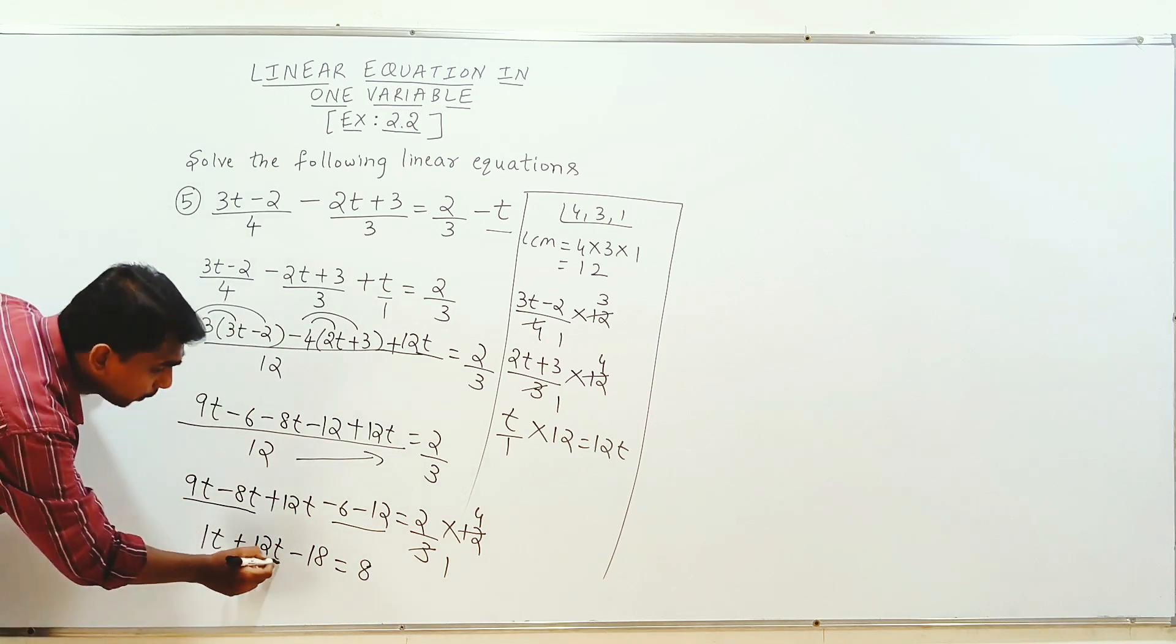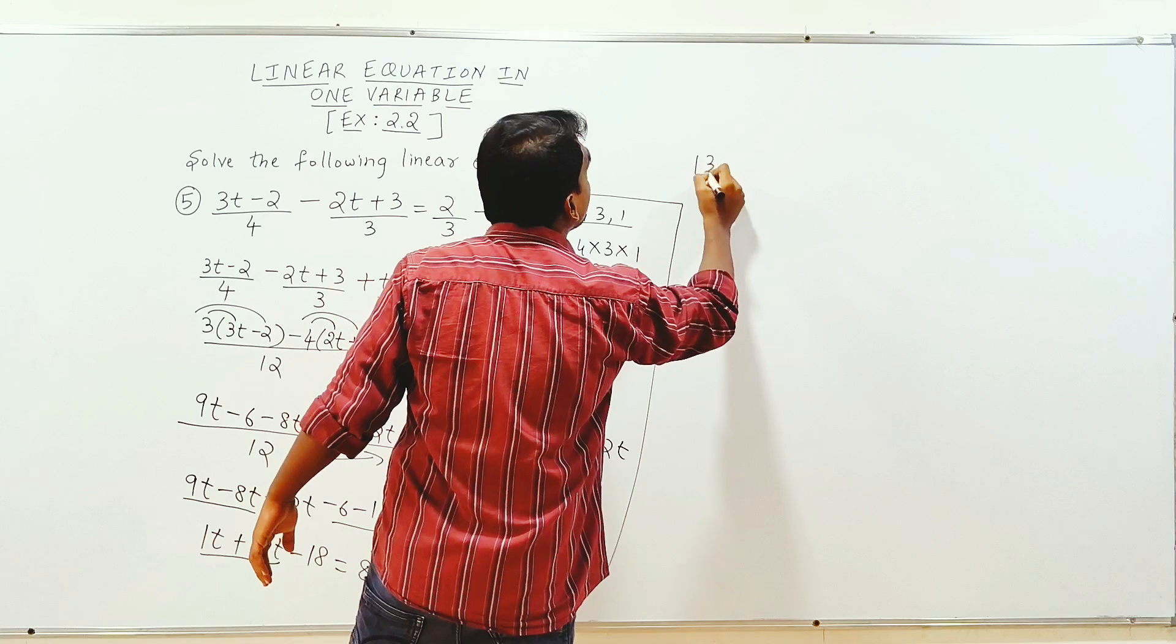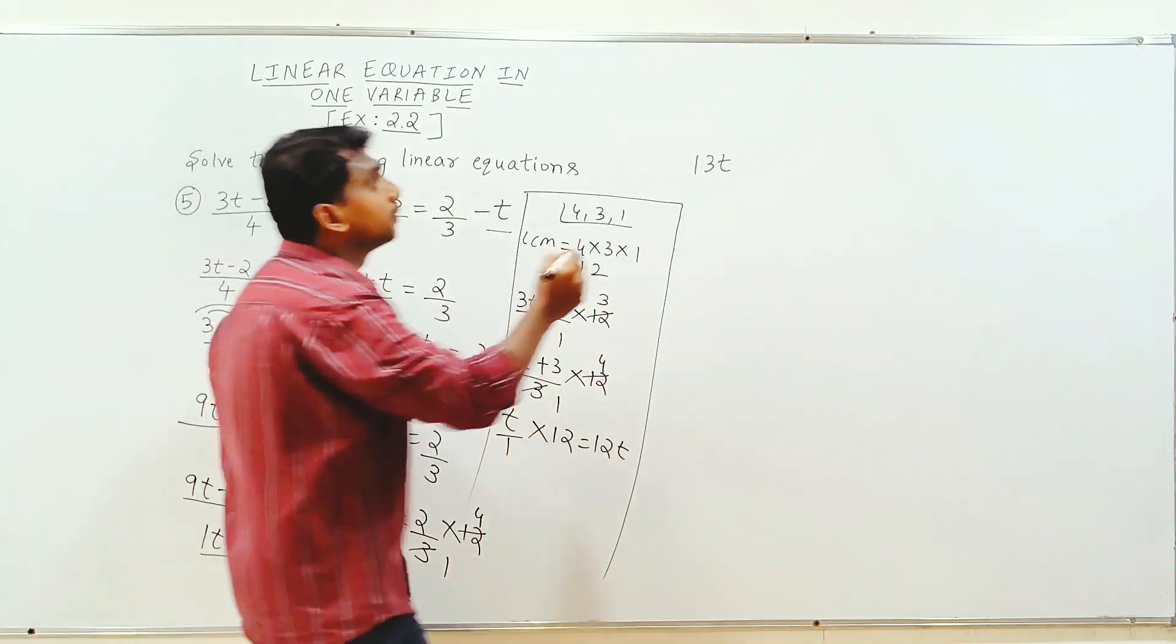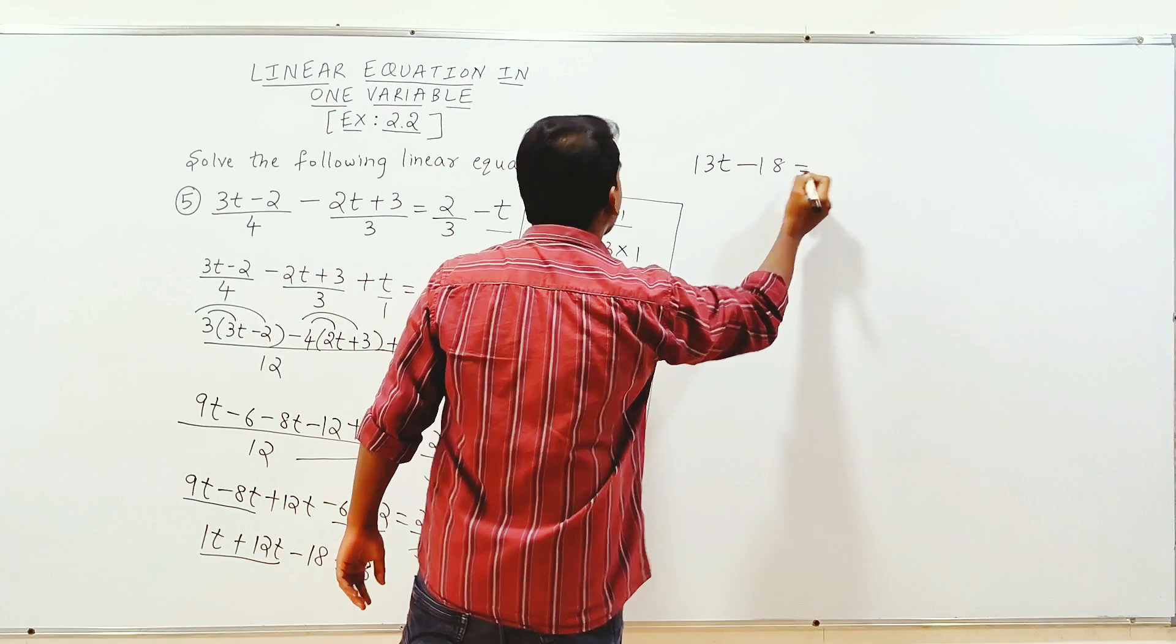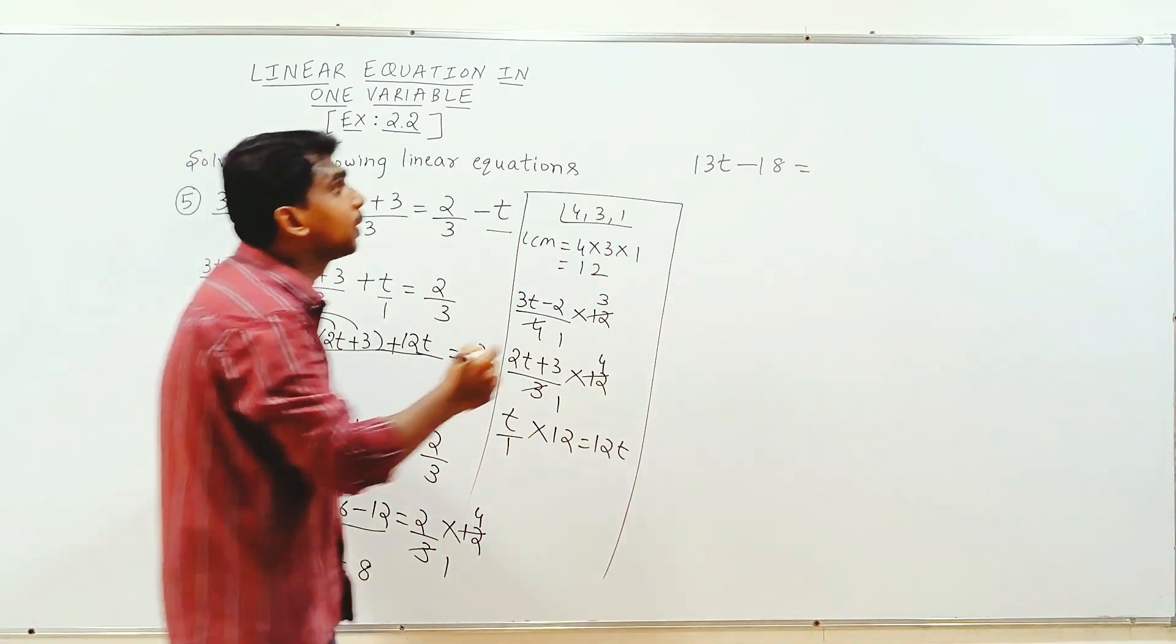Next step, 12t plus 1t, 13t minus 18 is equal to 8. Minus 18 is equal to 8.